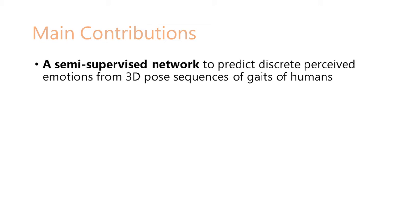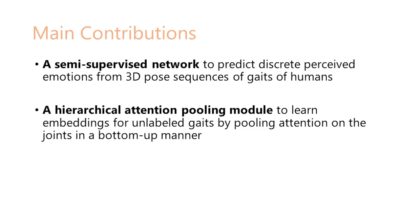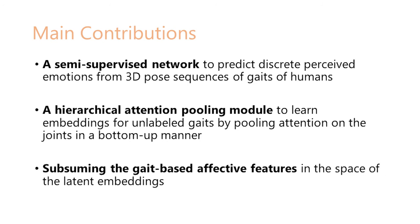One, we develop a semi-supervised network consisting of an autoencoder and a classifier that are trained together to predict discrete perceived emotions from 3D pose-sequences of human gaits. Two, we design a hierarchical attention pooling module on the autoencoder to learn useful embeddings for unlabeled gaits. This improves the mean average precision by 1 to 17% compared to state-of-the-art methods in both emotion recognition and action recognition on the EmotionGait benchmark dataset. Three, we also subsume the affective features learned from the input gaits in the space of latent embeddings in our autoencoder. This improves the mean average precision by 7 to 23% compared to state-of-the-art methods.